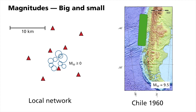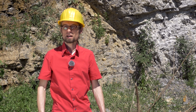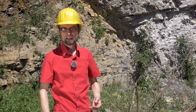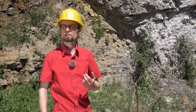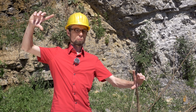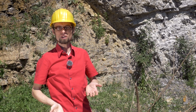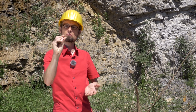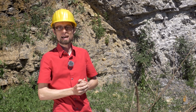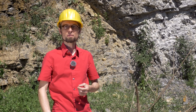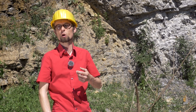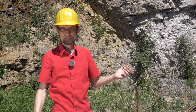Today, local seismometer networks are able to measure magnitudes far less than zero. A magnitude-minus-2 quake, for example, has a rupture plane measuring about one square meter — around this big. During the rupture, it slips by less than one millimeter. In Germany, a magnitude-4.5 earthquake occurs on average once a year, corresponding to an approximately 4-centimeter slip on a fault plane of 4 square kilometers.